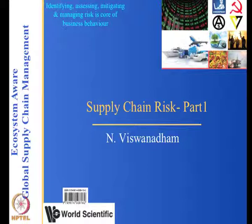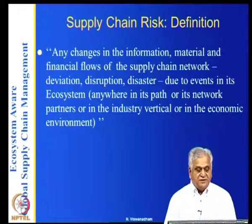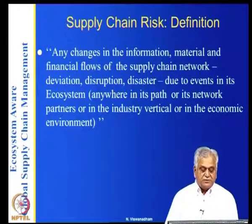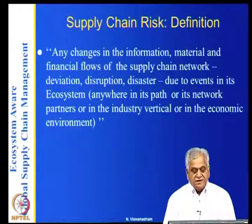Most businesses are now feeling the heat of supply chain risk. As we have seen earlier, several ecosystem parameters are causes of risk in the supply chain. Supply chain risk can be defined as any changes in the information, material, and financial flows in the supply chain network — it can be a deviation (small changes), a disruption (big changes), or a disaster where the entire IT or logistics network gets dismantled.